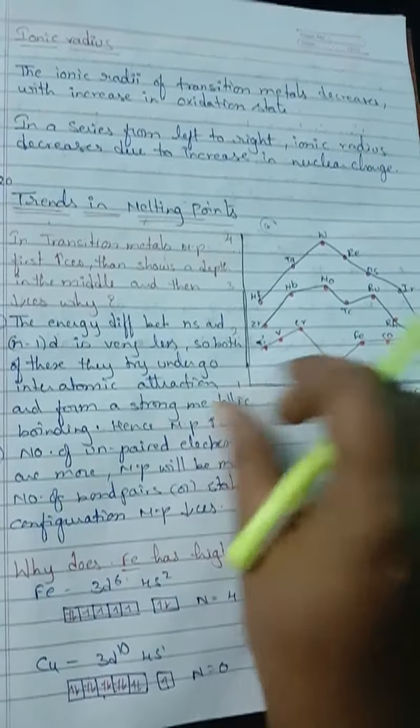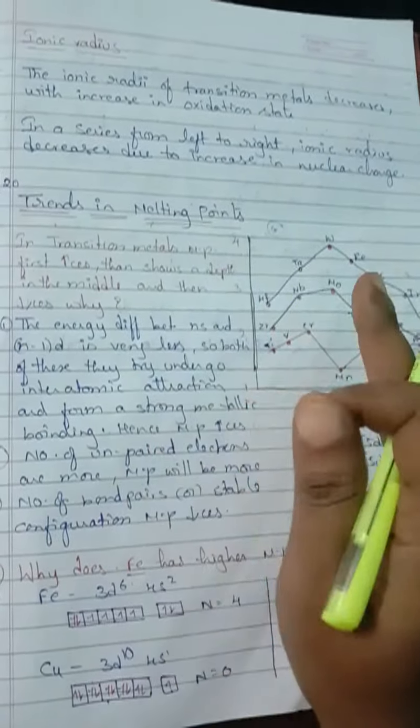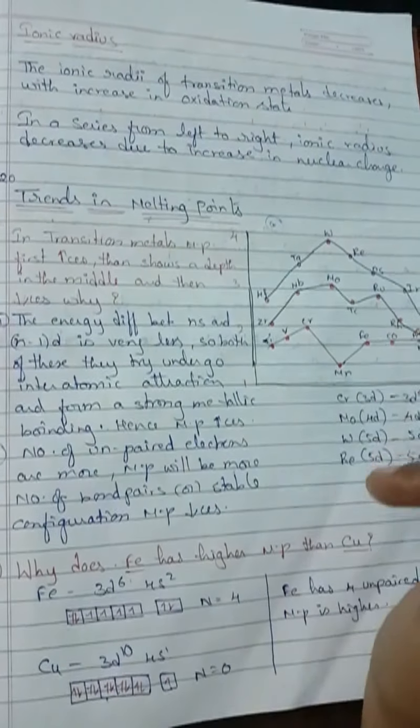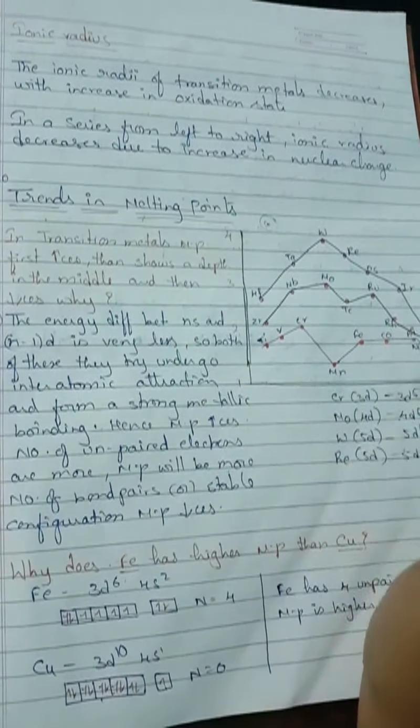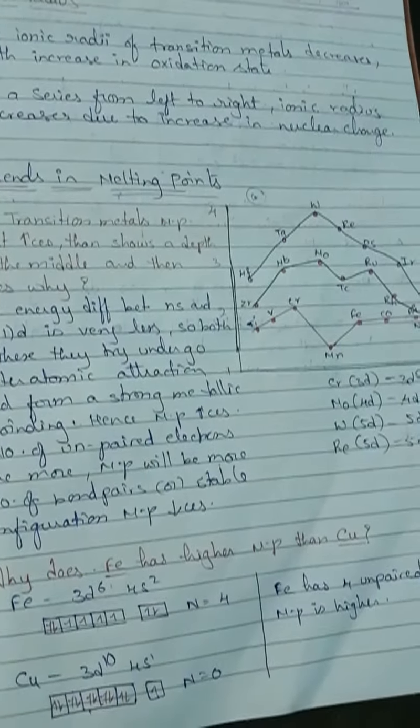Simple concept: when the number of unpaired electrons is more, the melting point will be more. If they have a stable electronic configuration — either half filled or completely filled — their melting point will decrease. Keep these two concepts in your mind.